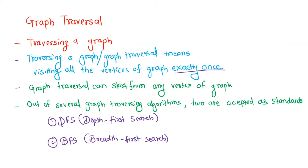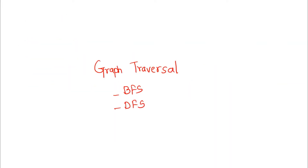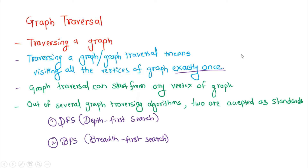In this video we are going to learn about what BFS is, with an example and an informal algorithm. So what is graph traversal? Traversing a graph means visiting each and every vertex of the graph exactly once. Graph traversal can start from any vertex. Out of several graph traversing algorithms, two are mostly accepted as standard: DFS (depth first search) and BFS (breadth first search).